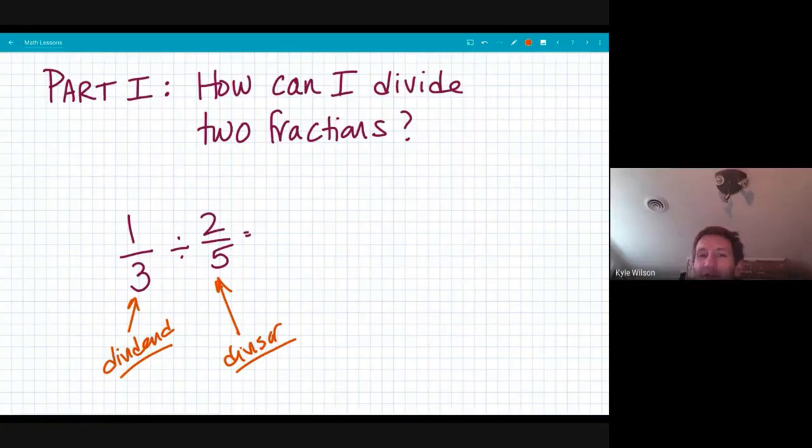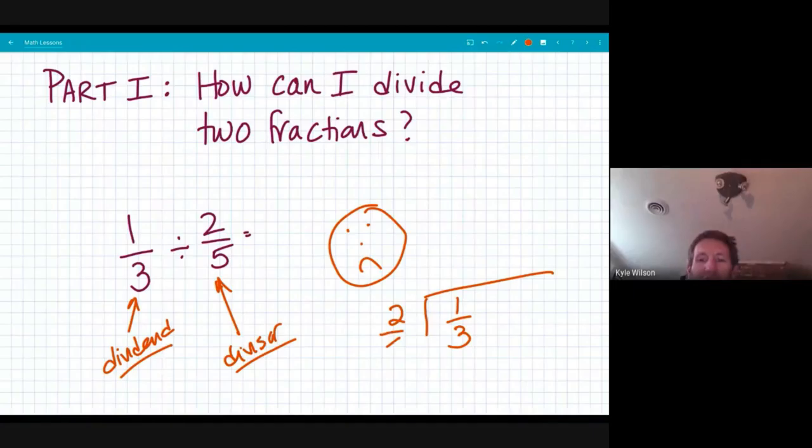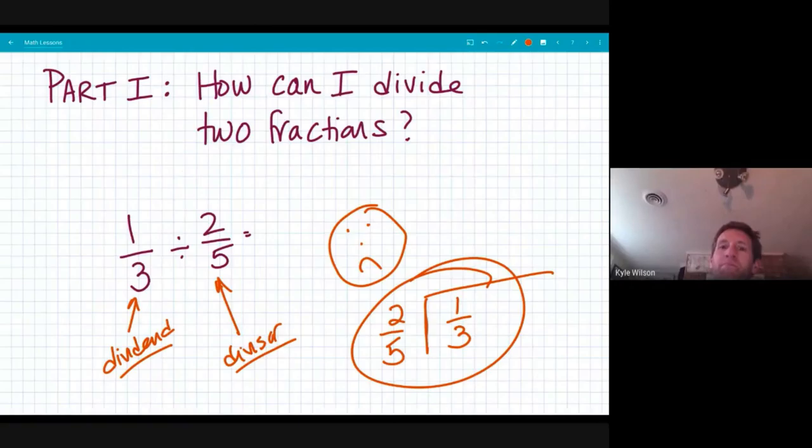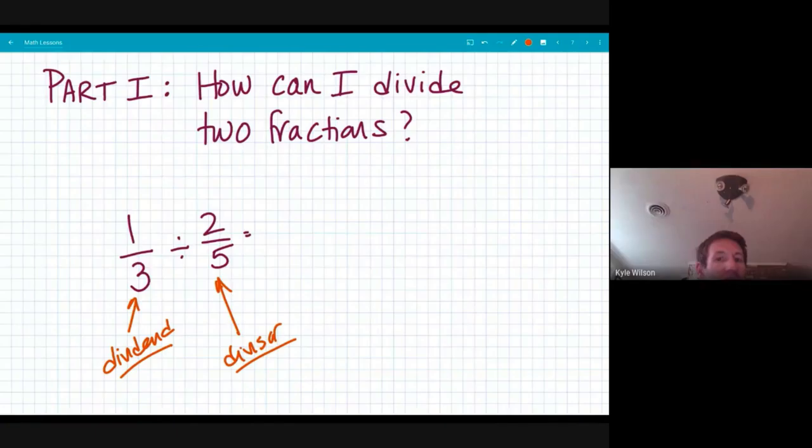The one thing that you're never going to want to do is set it up like any other division problem, because you're not going to say one-third and two-fifths and do that whole, do middle schoolers chew bacon, does McDonald's sell cheeseburgers. This is just going to cause you a world of pain, and you don't want to do that.